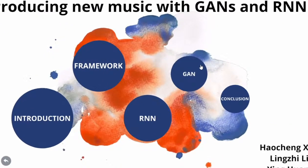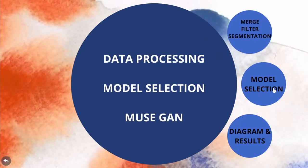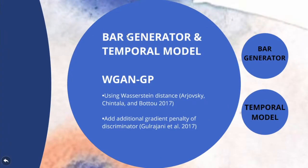After exploring many similar works related to our goal, we found MuseGAN fits our project well. It can generate 4-bar long music conditioned on a given melody to form an entire sound. In MuseGAN, it uses Wasserstein distance instead of JS divergence, and it adds an additional gradient penalty to the objective function for the discriminator in order to reduce the risk of model collapsing and achieve better optima with higher convergence rate and less parameter tuning. A bar generator is used to generate bar-by-bar music and arrange different bars into a temporal structure to form an entire sound.